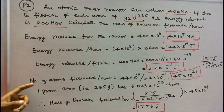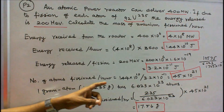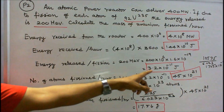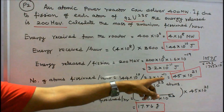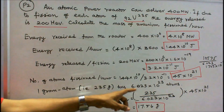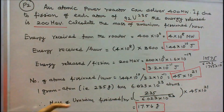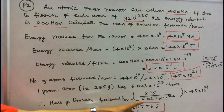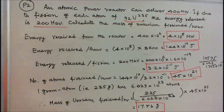Fourth step: number of atoms fissioned per hour = energy received per hour ÷ energy per fission = (144 × 10¹⁰) ÷ (3.2 × 10⁻¹¹) = 45 × 10²¹. Fifth step: one gram-atom of uranium-235 has 6.023 × 10²³ atoms. Therefore, mass of uranium fissioned per hour = (235 × 45 × 10²¹) ÷ (6.023 × 10²³) = 17.56 grams. So the mass of uranium fissioned per hour is 17.56 grams.